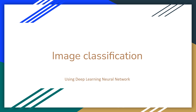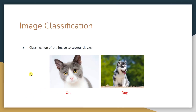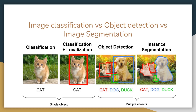Welcome back. In this video I'm going to talk about image classification using deep learning neural networks. Image classification means classifying an image into several classes and detecting which class it belongs to. For example, if we have two images, the algorithm should detect whether it's a picture of a cat or a picture of a dog — based on the given photo, the model should classify it accordingly.